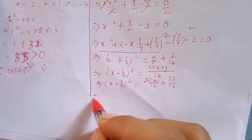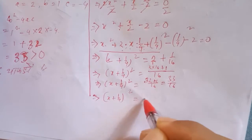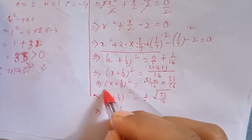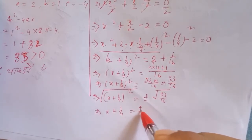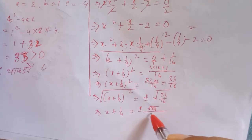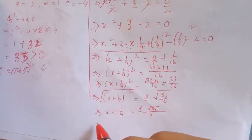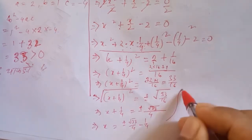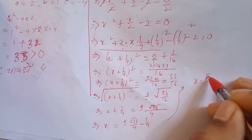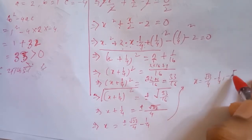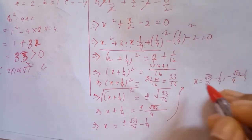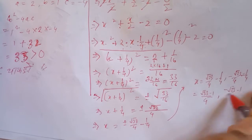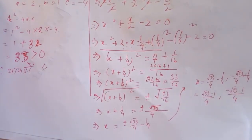It implies that x plus 1 by 4 whole square equal to plus or minus 33 by 16. Now they will use x plus 1 by 4. So x plus 1 by 4 is equal to plus or minus the square root of 33 by 16, which is plus or minus square root of 33 by 4. Therefore, it implies that x equals plus or minus square root of 33 by 4 minus 1 by 4. The answer is square root of 33 minus 1 by 4 and minus square root of 33 minus 1 by 4.